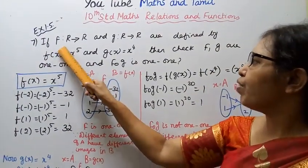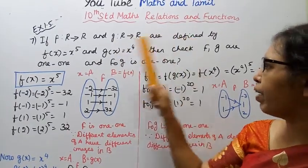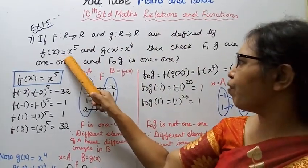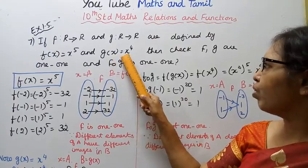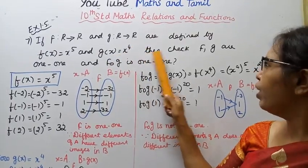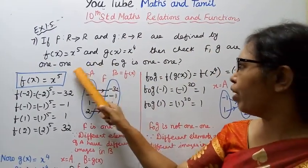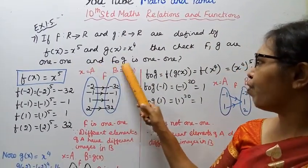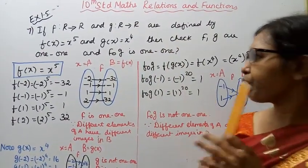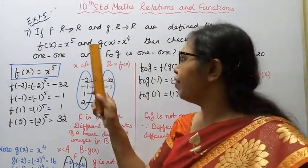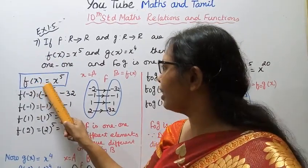If f from R to R and g from R to R are defined by f(x) = x^5 and g(x) = x^4, then check whether f, g are 1-to-1 and whether f∘g is 1-to-1.